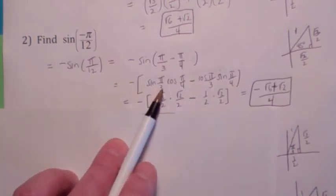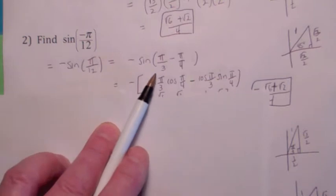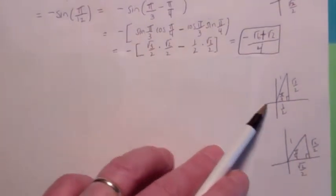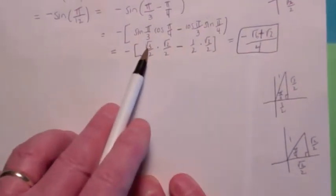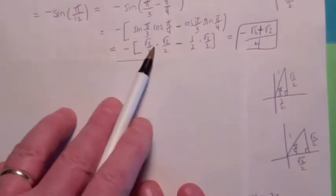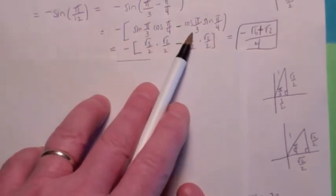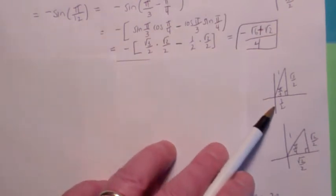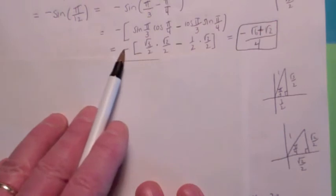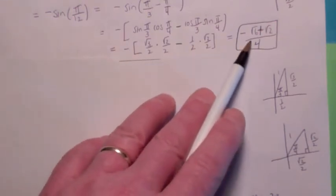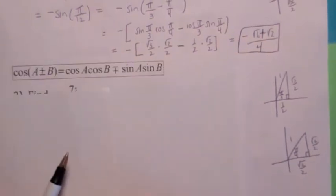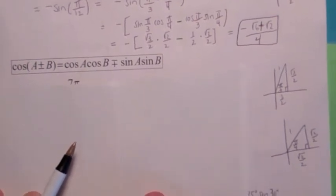So what's the sine of pi over 3? Sine of pi over 3 is radical 3 over 2. Cosine of pi over 4 is radical 2 over 2. Cosine of pi over 3 becomes 1 half, and sine of pi over 4 is radical 2 over 2. When you distribute the negative sign, you get negative radical 6 plus radical 2 over 4. So keep that one straight.